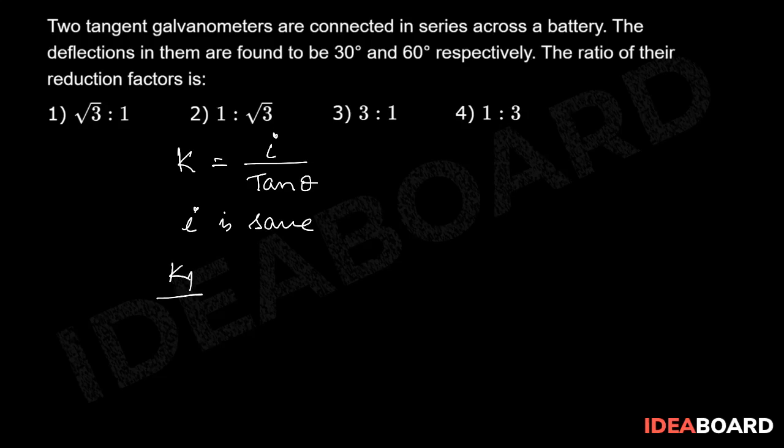k1 by k2 equal to tan theta 2 divided by tan theta 1 which is equal to tan 60 divided by tan 30,